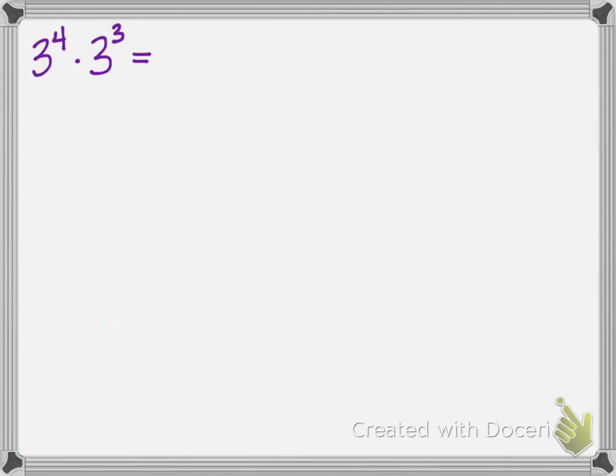We're going to learn how to multiply powers with the same base. Here's a simple example: three to the fourth power times three to the third power. To show you why this works, three to the fourth power is three times three times three times three — I'm sure you'll agree with me on that.